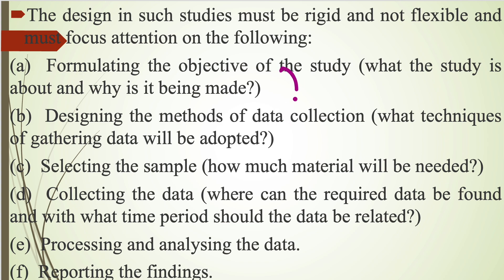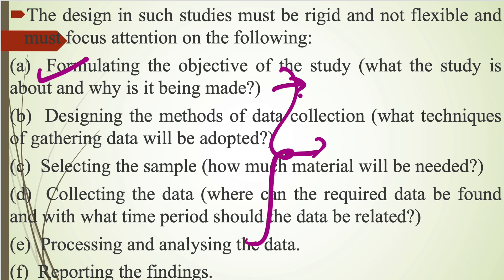These are the basic steps of any research process, and we have to clarify all the points in both research studies. The first step is formulation of objectives — what should be studied, why it is being made, and what is the purpose must be specified before starting. The second step is designing the methods of data collection. In descriptive research studies, we generally use a set of structured questions and structured interviews.